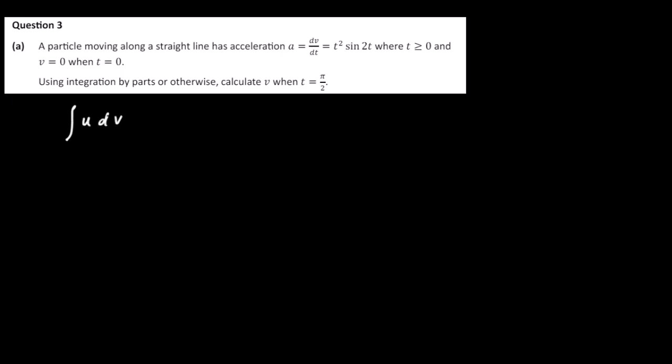We're going to use integration by parts, as suggested. Integration by parts, from the tables, is the integral of u dv equals uv minus the integral of v du. We're also going to use the ILATE rule.